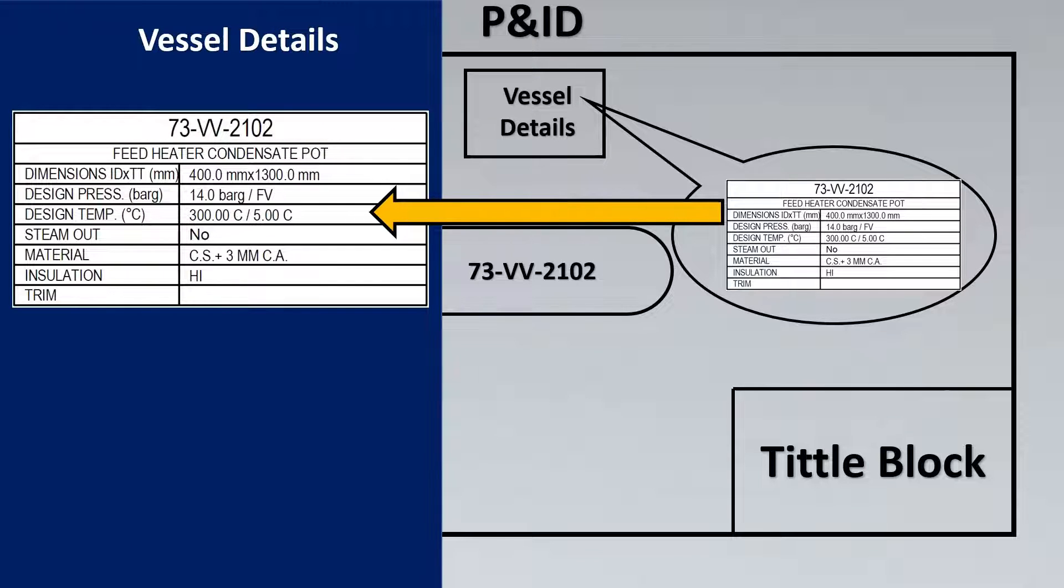Let's take an example to understand what important information we can extract as an engineer. The first thing is the name of the vessel. So here if you see it's a feed heater condensate pot, so basically it's a condensate pot, so not a very critical equipment.